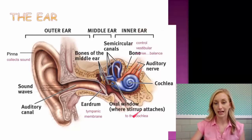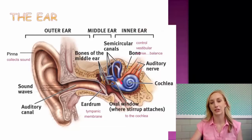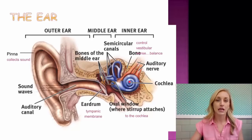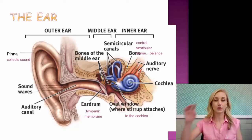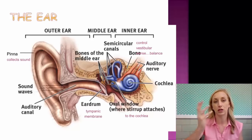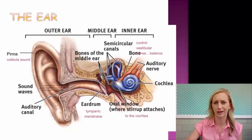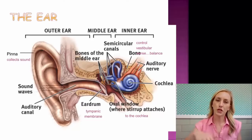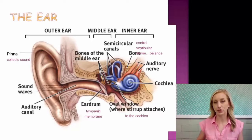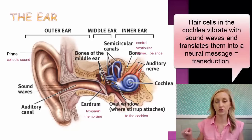The oval window is where the stirrup attaches to the cochlea — it's essentially where the middle ear connects to the inner ear. The cochlea is where the basilar membrane and all of the hair cells are located. Make sure you write this down: if those hair cells are damaged, that is irreversible damage, and that is noise-induced hearing loss. The hair cells are damaged from exposure to sound over time. The hair cells are actually what transduces the sound wave into a neural message — so if you're ever asked where transduction occurs in the ear, it's in the hair cells.